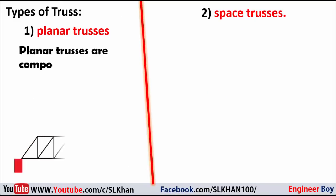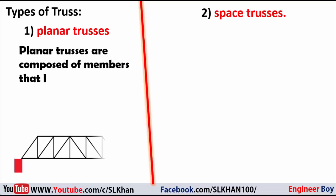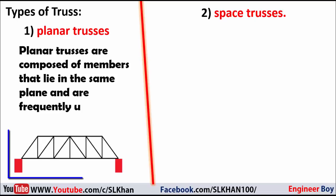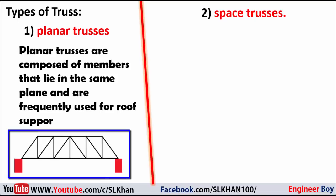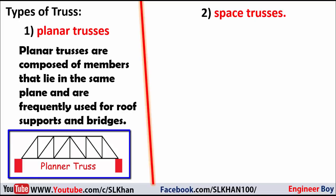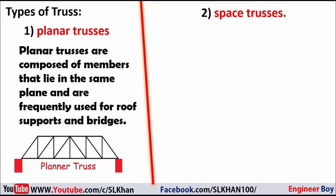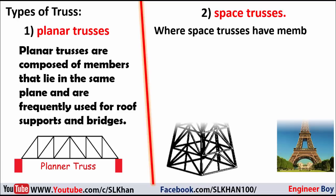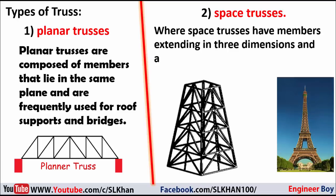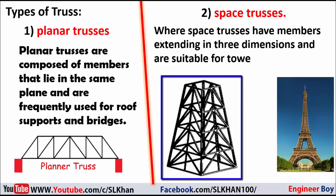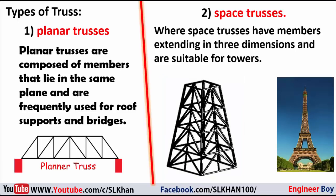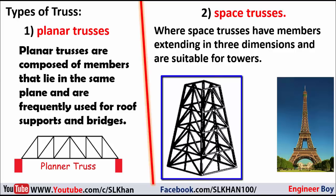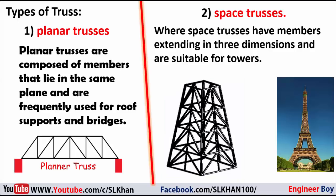There are two types of trusses: planar trusses and space trusses. Planar trusses are composed of members that lie in the same plane and are frequently used for roofs, supports, and bridges. Space trusses have members extending in three dimensions and are suitable for towers.